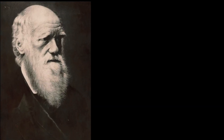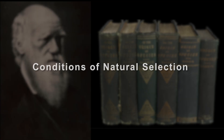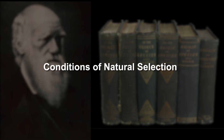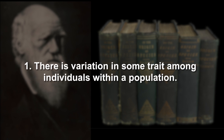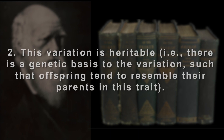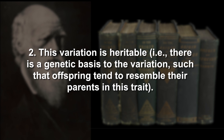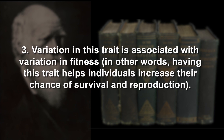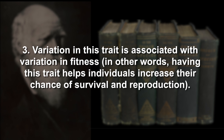Charles Darwin in 1859 argued in his book On the Origin of Species that in order for natural selection to occur, some conditions needed to be met. Number one, there is variation in some trait among individuals within a population. Number two, this variation is heritable, so there is a genetic basis for the variation, such that offspring tend to resemble their parents in this trait. And number three, variation in this trait is associated with variation in fitness — in other words, having this trait helps individuals increase their chance of survival and reproduction. For the next activity, you will write a description about why variation within a population is an important part of biological evolution and create a model using a scenario that shows how this variation plays out in evolution.